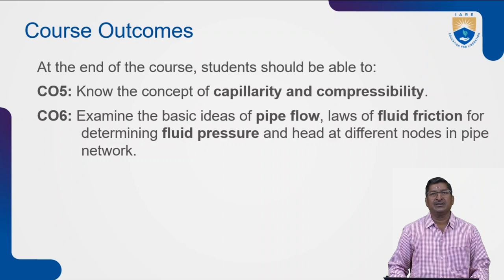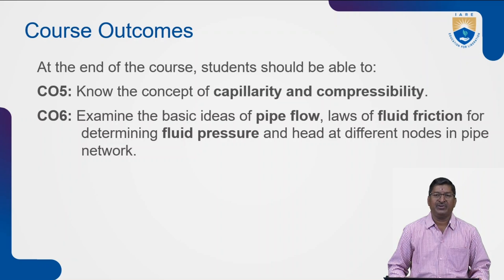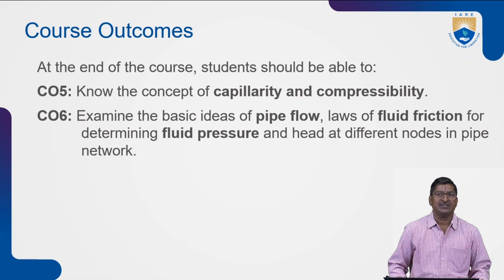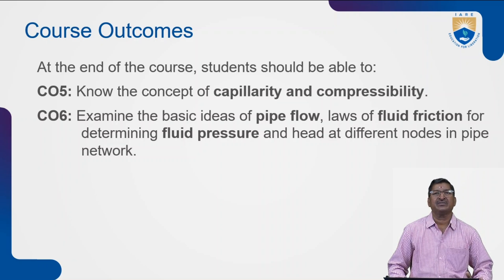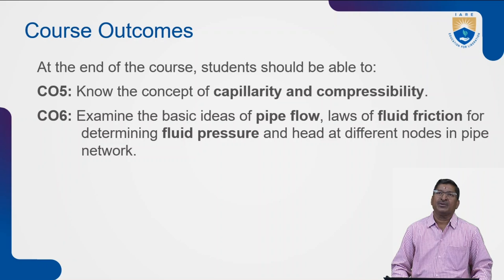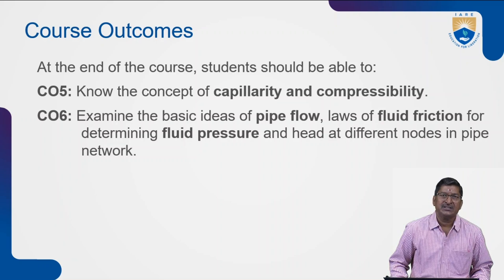Course outcome 6 is pipe flow — how the fluid will act as it travels through a pipe. There will be fluid friction. If any two materials are moving with different velocities, there will be friction between their surfaces. The fluid travels through the pipe — whether by gravitational flow or pressure flow — and there will be friction between the pipe surface and the fluid surface. The effects of this friction, and how much it occurs, will all be understood by the end of this course.